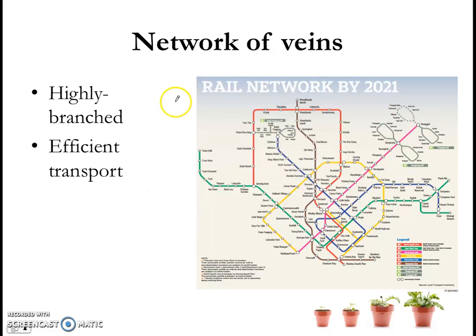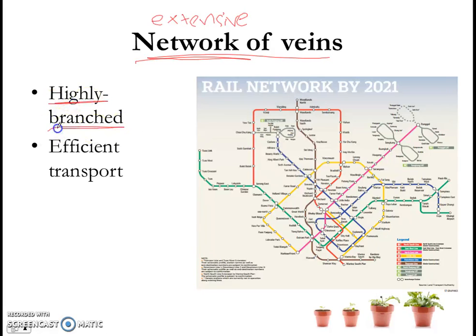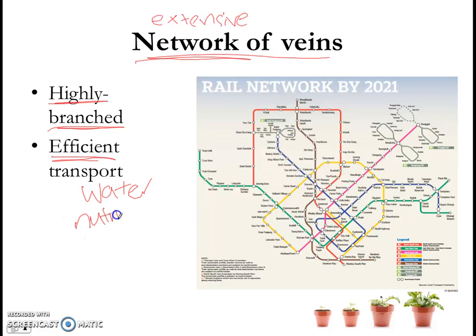Finally, you would have read that leaves have a very extensive, or large, network of veins. The network of veins is also very highly branched, and that is so that the veins can carry out efficient transport of water and also nutrients throughout the leaf. This is a bit like the railway network in Singapore — the ever-expanding MRT network. The more extensive and highly branched it is, the more efficient the transport. In the same way, leaves have a very extensive network of veins.